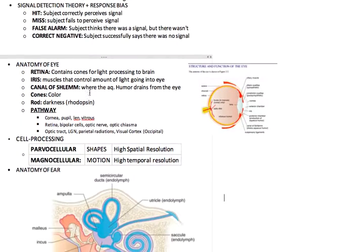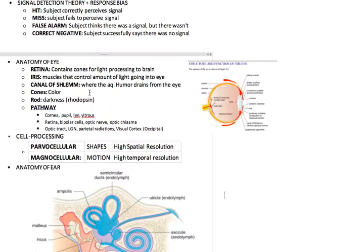Anatomy of the eye. The retina contains cones for light processing in your brain. The highest amount of cones is in the fovea. Iris are the muscles that control the light that goes in. There's the constrictors and dilators. Canal of Schlemm is where aqueous humor drains from the eye.